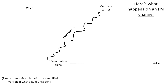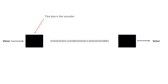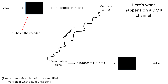DMR is a digital voice standard. This means instead of modulating a carrier with your voice, it modulates the carrier with digital data containing your voice. A vocoder is used to convert the voice from a sound wave to a stream of bits that represent the voice. This stream of bits is then used to modulate the carrier. At the other end, the carrier is demodulated, producing the stream of bits, which is fed into the vocoder again and converted back to voice that we can understand.